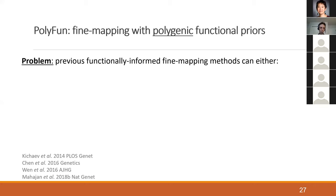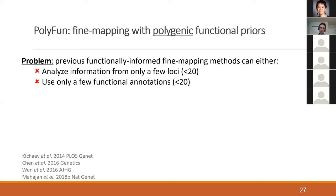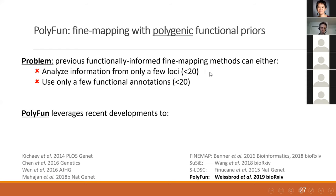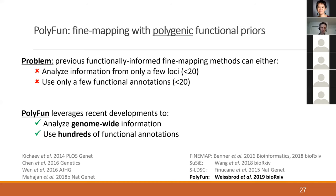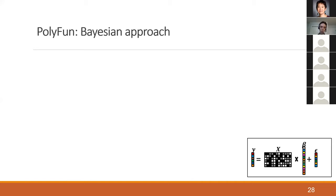I'm going to describe a method we developed called PolyFun, which performs fine mapping with polygenic functional priors. It's not the first method to do this, but it improves over previous methods in scalability. Previous methods were limited — either to a few loci or a few functional annotations. PolyFun aggregates information from all across the genome from millions of SNPs, weighting each SNP optimally according to hundreds of functional annotations.